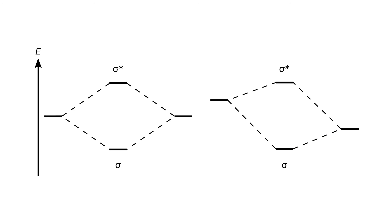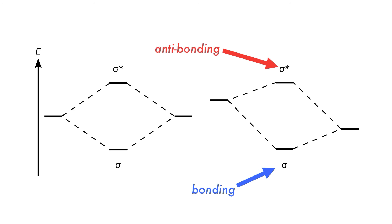When molecular orbitals combine successfully, they produce a bonding and anti-bonding orbital. The bonding orbital is lower in energy than the atomic orbitals, and the anti-bonding orbital is higher in energy than the atomic orbitals.